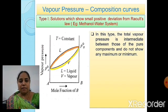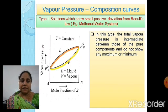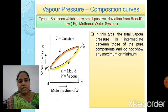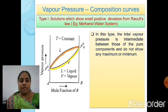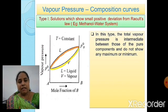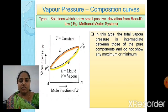We can name them as the L-curve and V-curve. The L-curve represents the variation of vapor pressure with the mole fraction of B, or we can say L represents the variation of vapor pressure with the composition of the liquid.